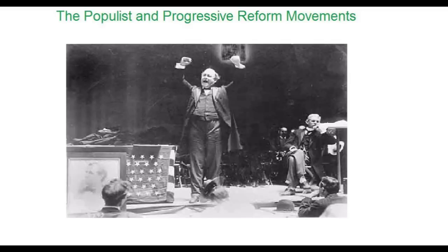Today we're going to focus on the populist and the progressive reform movements of the late 19th and early 20th centuries. We're going to look at how and why these movements come about in the United States, their influences, the membership of these movements, and ultimately their impact on American politics and the American economy during the late 1800s and early 1900s.